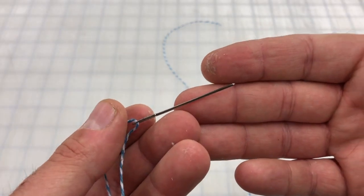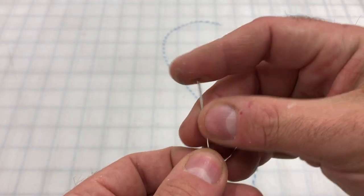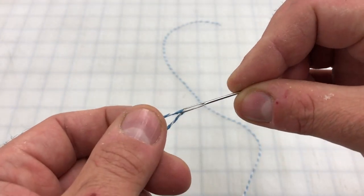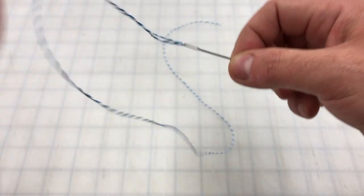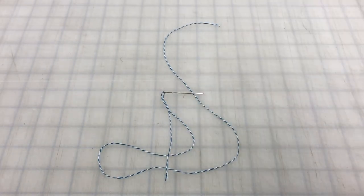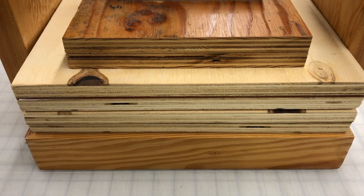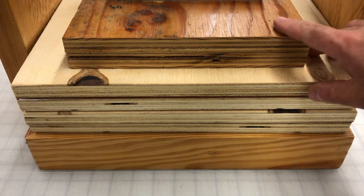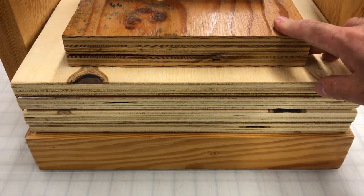And then I thread a needle. This particular needle is fairly blunt on the end. It's a pretty thick needle and it has a big eye on it. You can use any kind of needle, really. But I find a needle that's not too pointy keeps from having the needle catch the paper when you're doing your stitching.